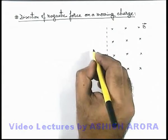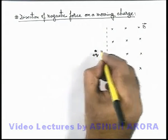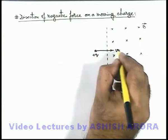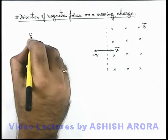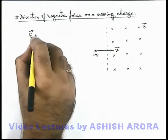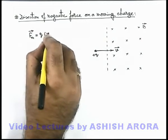And from one of its boundaries, a positive charge q enters into it with a velocity vector v. We have already discussed that the magnetic force acting on the charge is given by q v cross b.